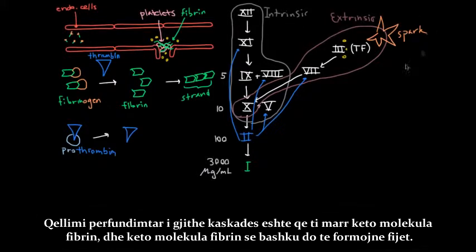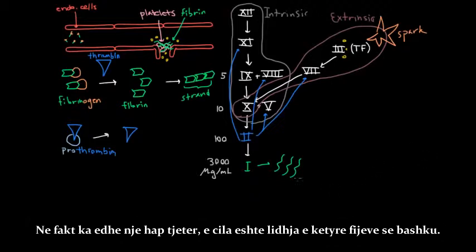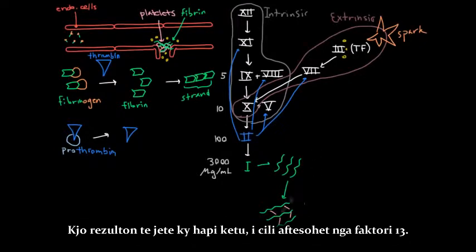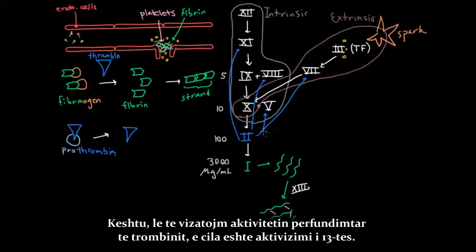The end goal of this whole cascade is to get these fibrin molecules. And these fibrin molecules together will form some strands. But it actually turns out that there's one more step, which is to connect these strands together. And so we're going to want to connect these strands together with some crosslinks. These crosslinks will just hold them together so that they actually form a tight mesh. And it turns out that it's this step right here which is enabled by factor 13.